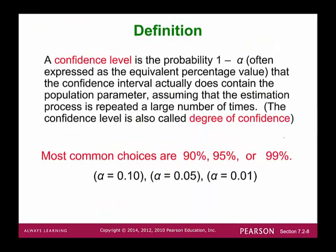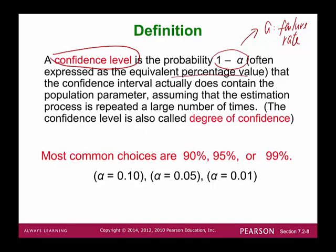The confidence level is the probability expressed as 1 minus alpha. Alpha is what we call the failure rate, and 1 minus alpha is the success rate. It's the percentage expressing how often the confidence interval actually does contain the population parameter. The most common values are 90%, 95%, and 99% confidence levels.